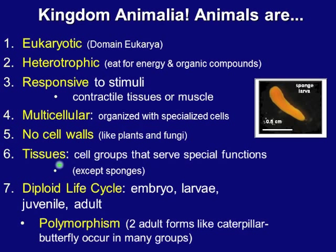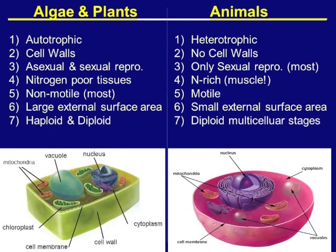5. They have true tissues — cell groups that serve special functions; we don't see that in sponges. They have a diploid-dominant life cycle: embryo, larvae, juvenile, and adult. Typically only the gametes are haploid. They exhibit polymorphism, so they'll have two forms in their life cycle, like the caterpillar and butterfly, and that occurs in many groups.